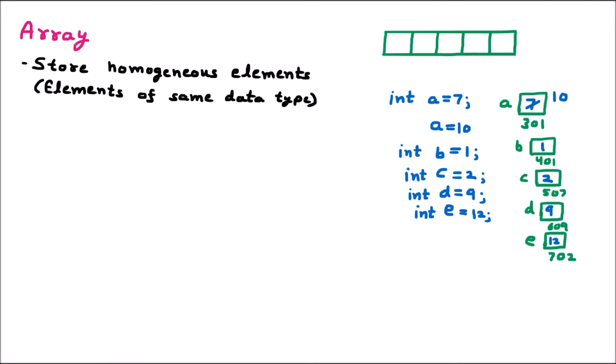Here we can see that all elements are of integer type: int a, int b, int c, int d, int e — five integer variables. Instead, we can simply write int a[5]. This is the declaration of an array — with a single line we can reserve five memory blocks to store integer-type elements. Array can be of float or integer, but all elements must be of the same category — either all integer, all float, or all character.